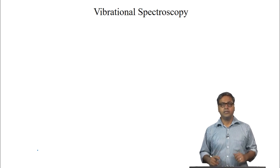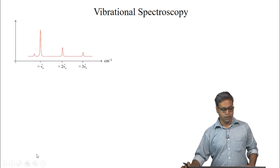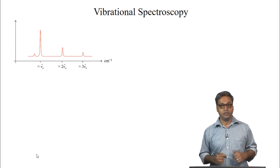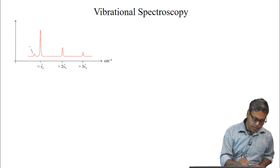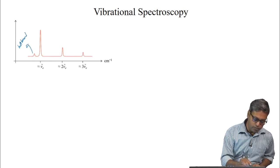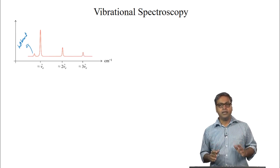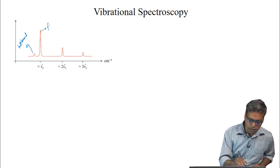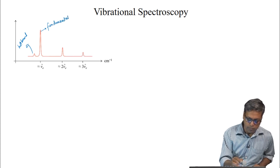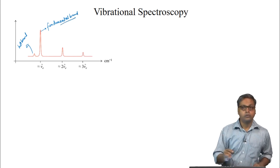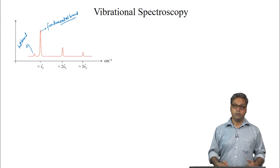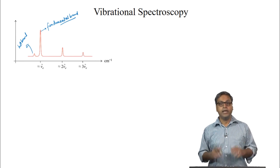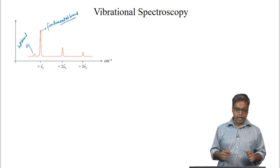Let us once more see where all these bands will appear in a spectrum. This figure shows 4 bands of different intensities at different frequencies. The leftmost band is the hot band. This band is at a frequency smaller than the fundamental band. The hot band is at a frequency smaller than the fundamental band because the gap between v=1 and v=2 is smaller than the gap between v=0 and v=1.